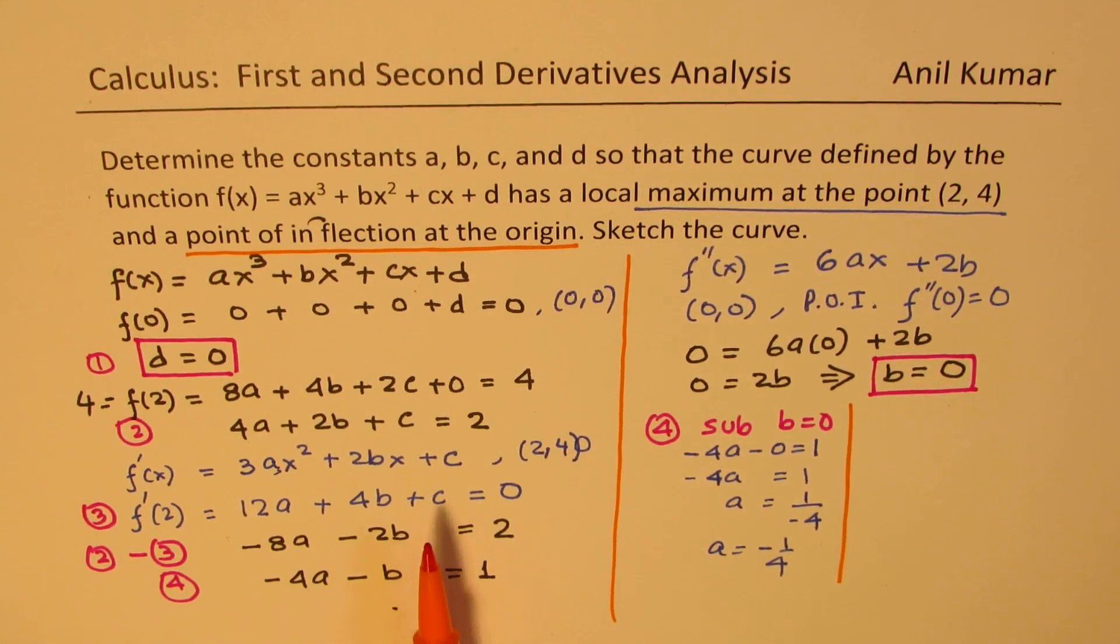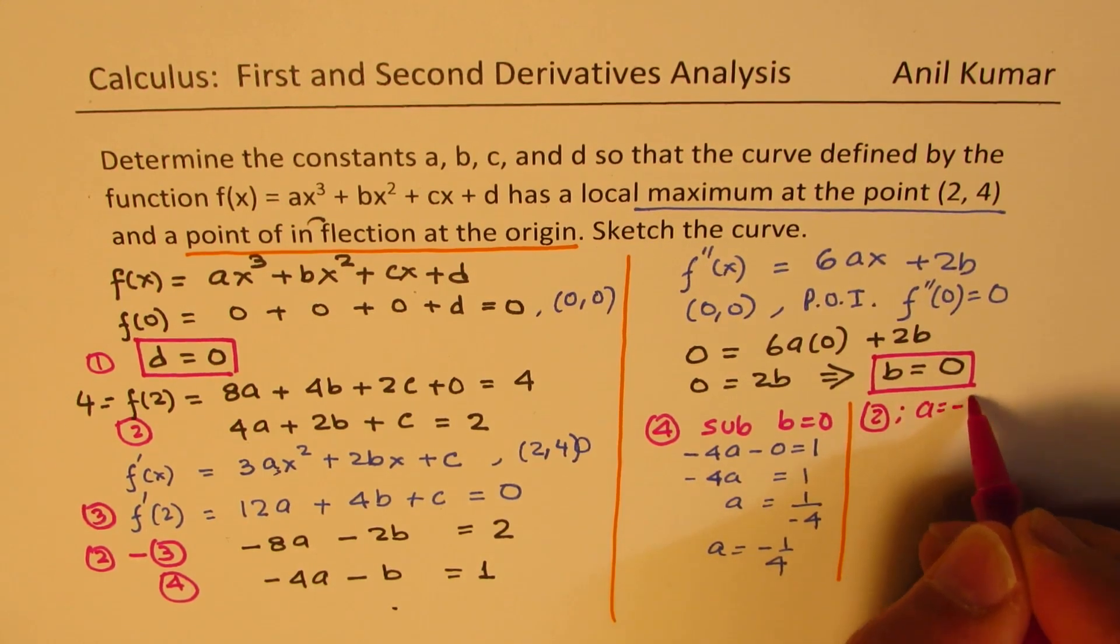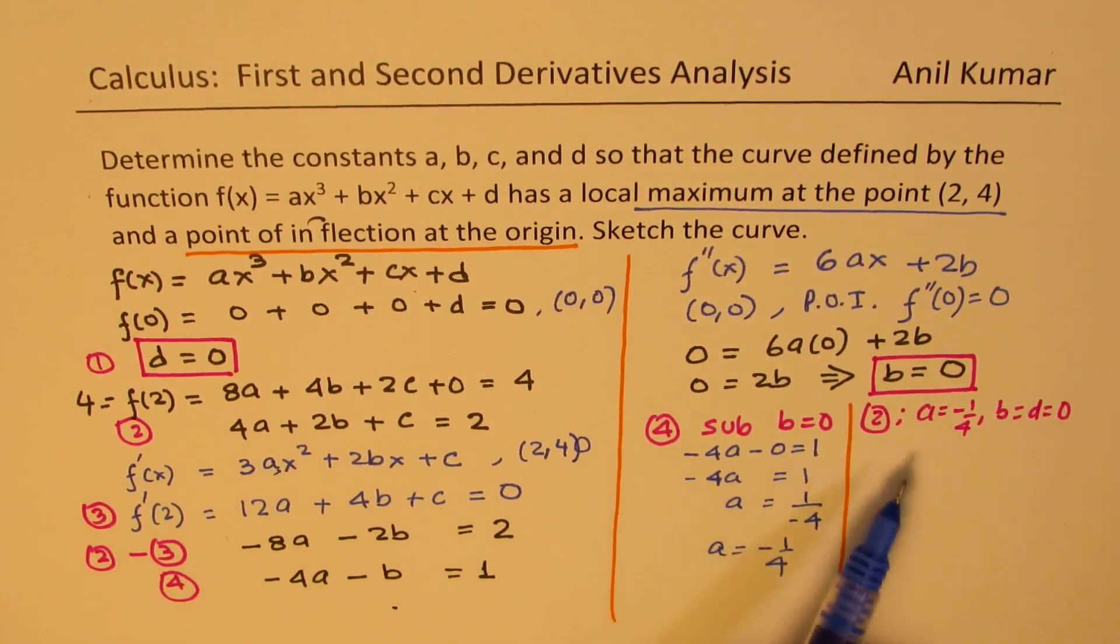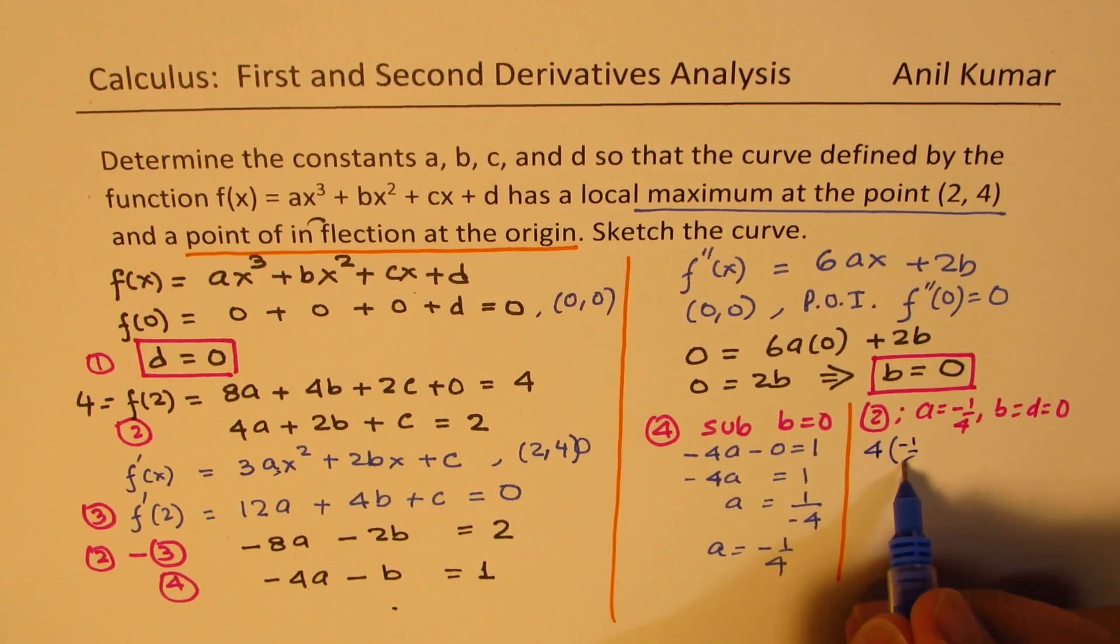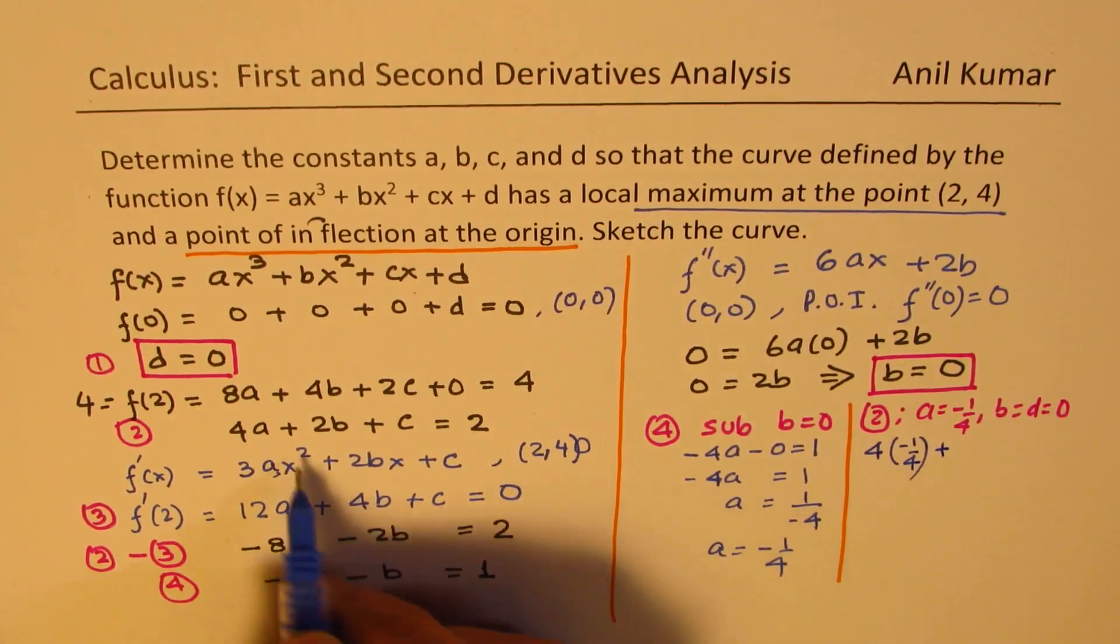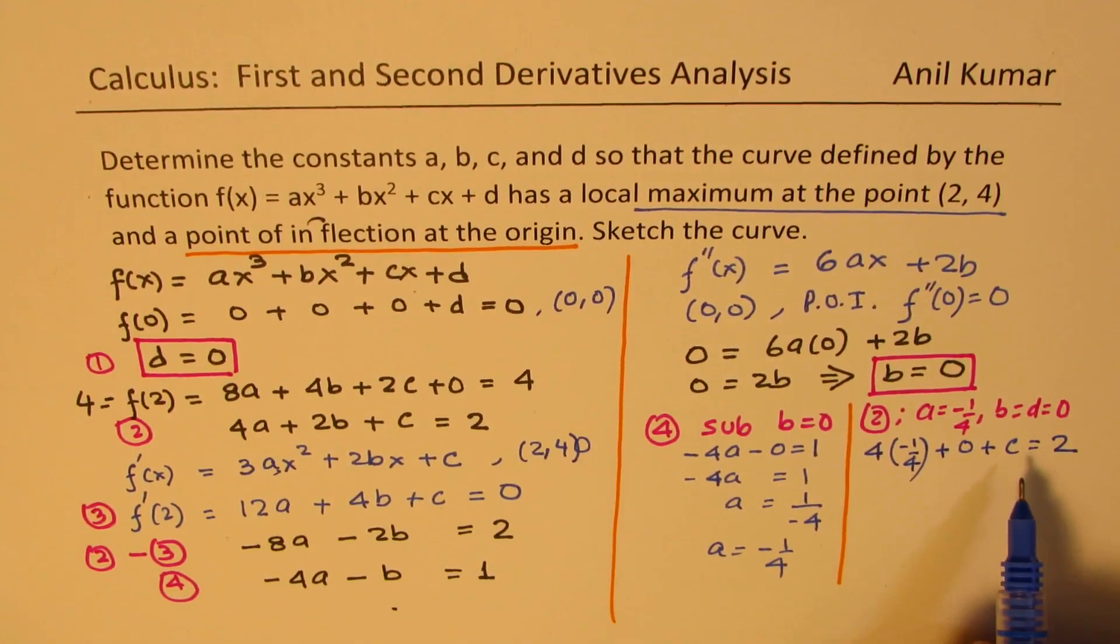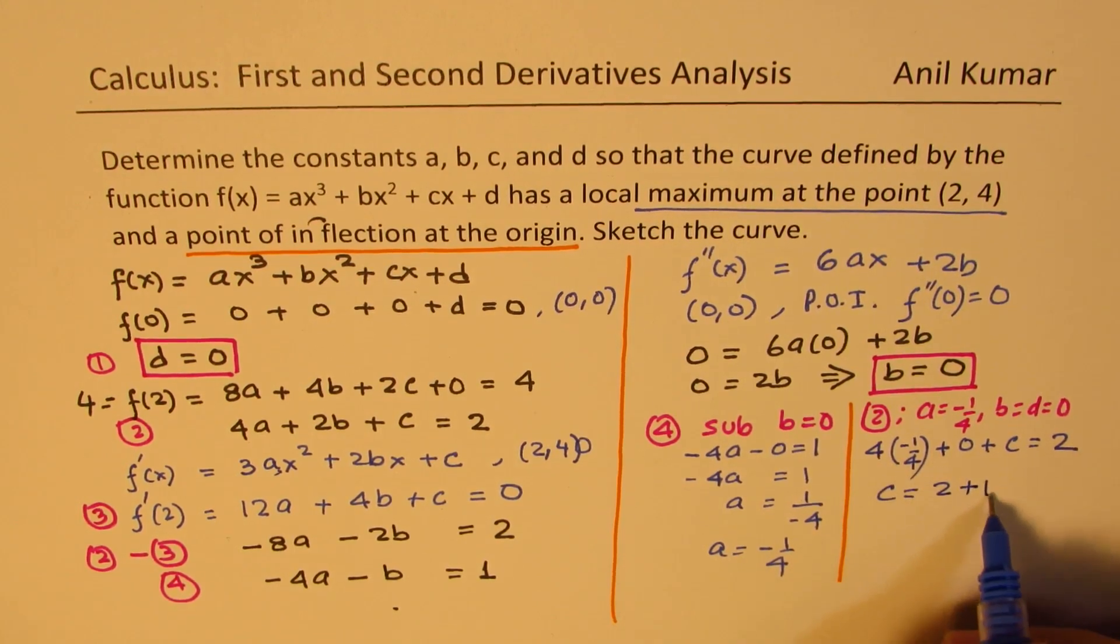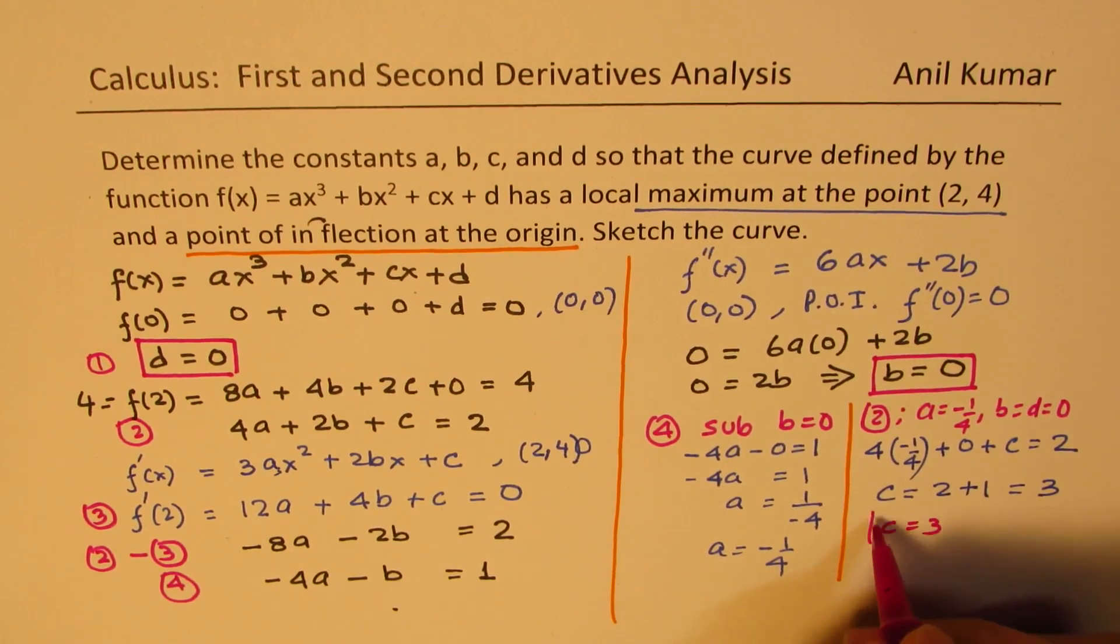Now, to get the value of c, we can use our equation number 2. So in equation 2, sub a = -1/4, b = d = 0. So in equation number 2, which is right here, 4 × a is -1/4, plus that is 0, plus c = 2. That's what we get. From here, we can find that c = 2, and that is -1 taking to this side plus 1. So we get c = 3. So we get c = 3 as our value.